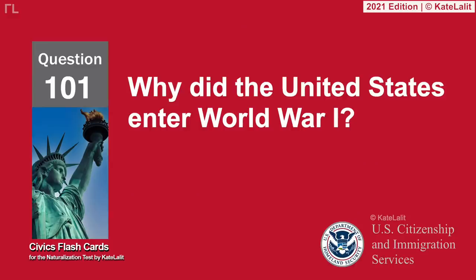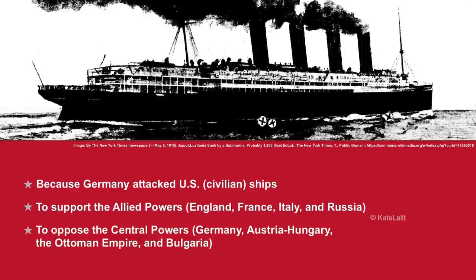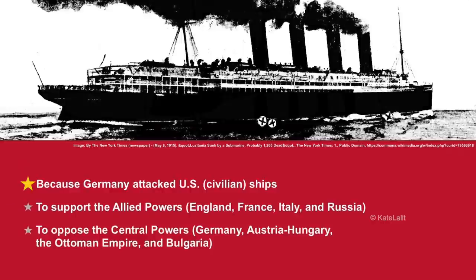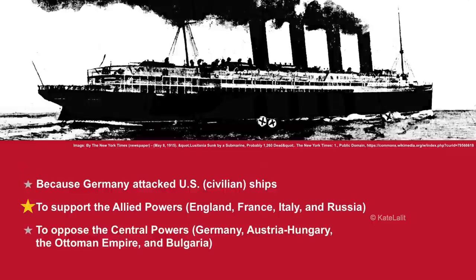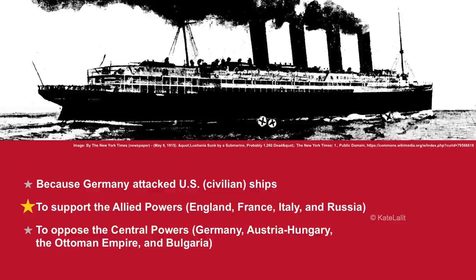Why did the United States enter World War I? Because Germany attacked U.S. civilian ships. To support the Allied Powers — England, France, Italy, and Russia. To oppose the Central Powers — Germany, Austria-Hungary, the Ottoman Empire, and Bulgaria.